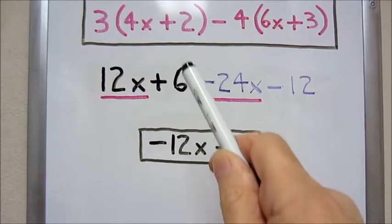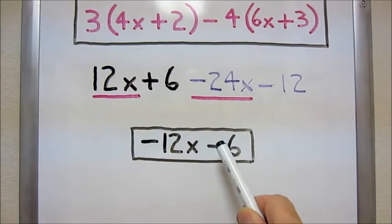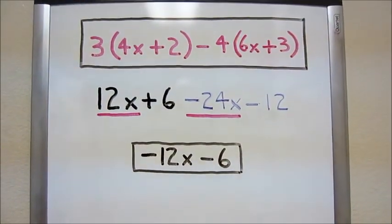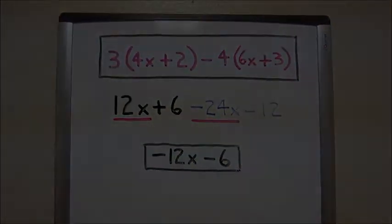Our second set of like terms is 6 minus 12 to give us negative 6. Therefore, our final answer is negative 12x minus 6. Thanks for listening.